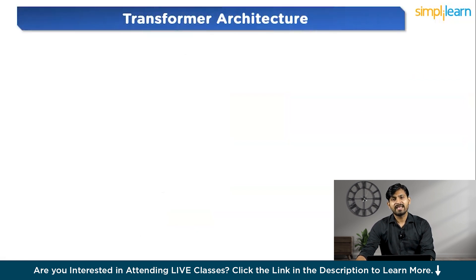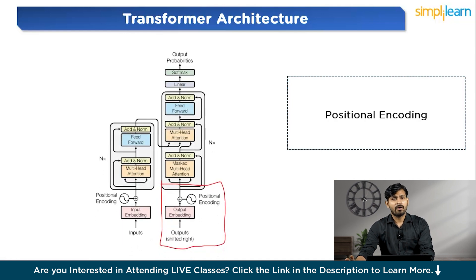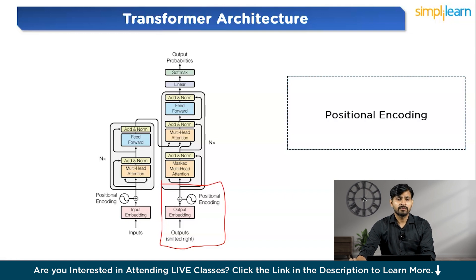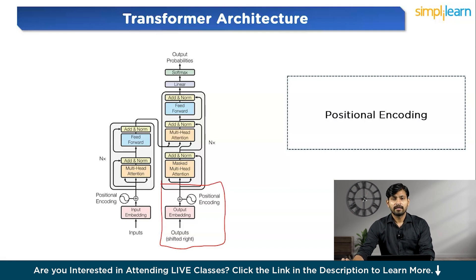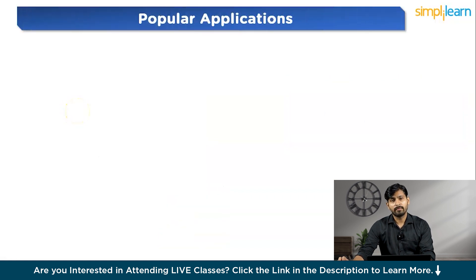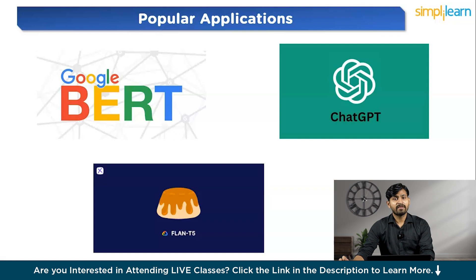Finally, we have positional encoding, which adds order to the sequence. Transformers process the input sequence all at once, not word by word, so they need a way to understand the order of words in the sentence, since word order matters in most languages. They do this by adding a special positional encoding vector to each word in the sequence. This encoding tells the model where each word appears in the sentence. Positional encoding uses sine and cosine functions to generate position-specific vectors, which are added to the word embeddings — the numerical representation of each word. In this way, the Transformer knows where each word is, even though it processes the sequence in parallel. This architecture makes Transformers fast, efficient, and powerful for tasks like translation, text generation, and summarization. They form the backbone of advanced models like BERT, GPT, and T5, which are widely used in NLP today.